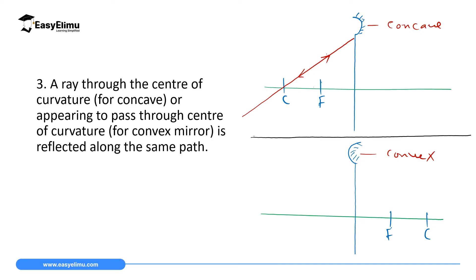For a convex mirror, the ray appears to have been directed to the center of curvature C behind the mirror. Virtual rays are drawn as dotted lines — that is very important. So if a ray seems to be directed through point C when it hits the mirror, it gets reflected back along its own path. That is another important ray.